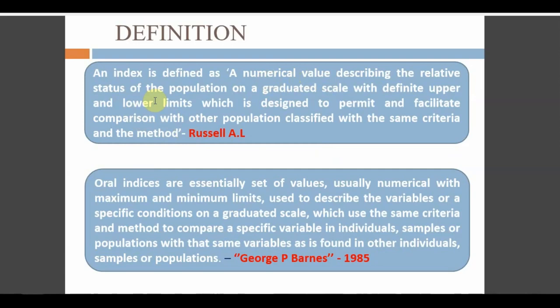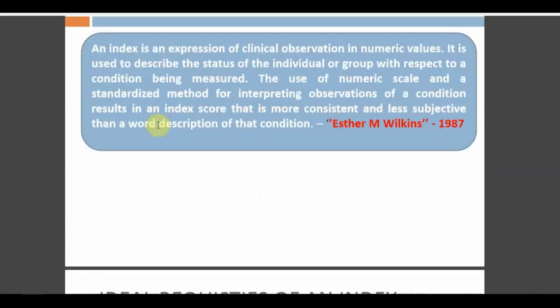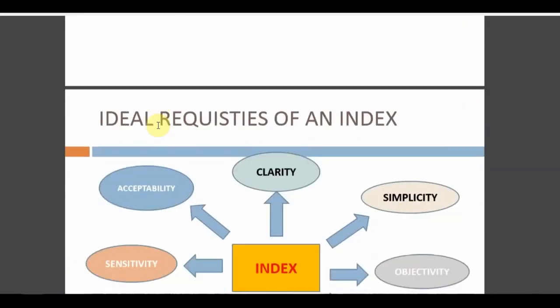The index describes the status of a population — what is the oral health status, caries status, plaque status, or gingival status — on a graduated scale with proper markings, with a definite upper and lower limit. For example, in OHIS the upper limit is 6 and lower limit is 0. The purpose is to facilitate comparison with other populations classified by the same index, so comparison between groups is what an index is made for.